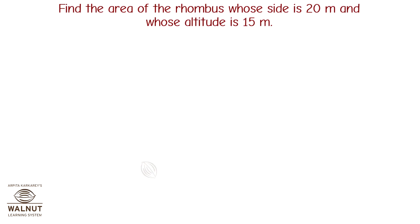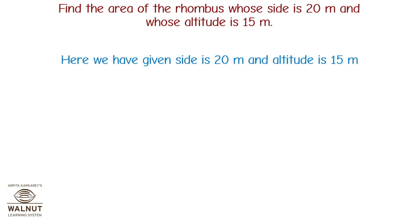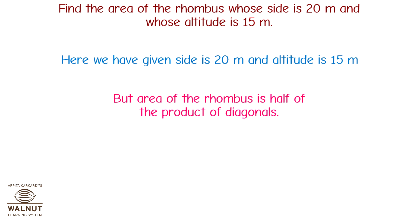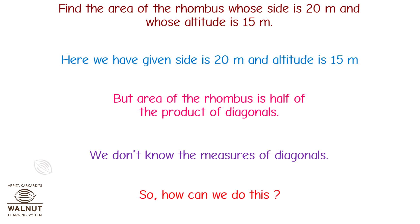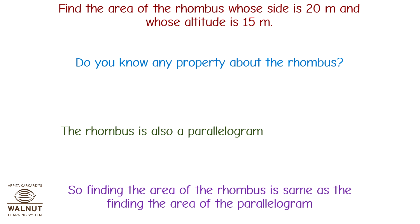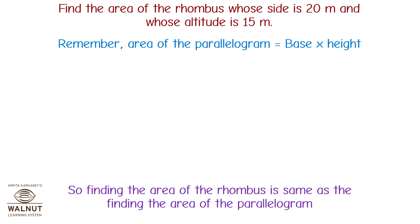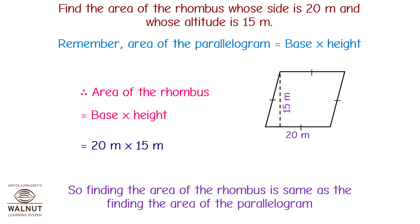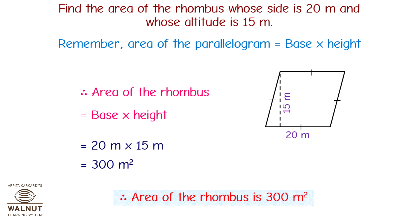Let's take a look at another one. Find the area of the rhombus whose side is 20 m and whose altitude is 15 m. We don't know the diagonals, so how can we do this? A rhombus is also a parallelogram, so finding the area of the rhombus is the same as finding the area of a parallelogram. Area of a parallelogram equals base into height. Therefore, area of the rhombus equals 20 m into 15 m, which equals 300 m². Therefore, area of the rhombus is 300 m².